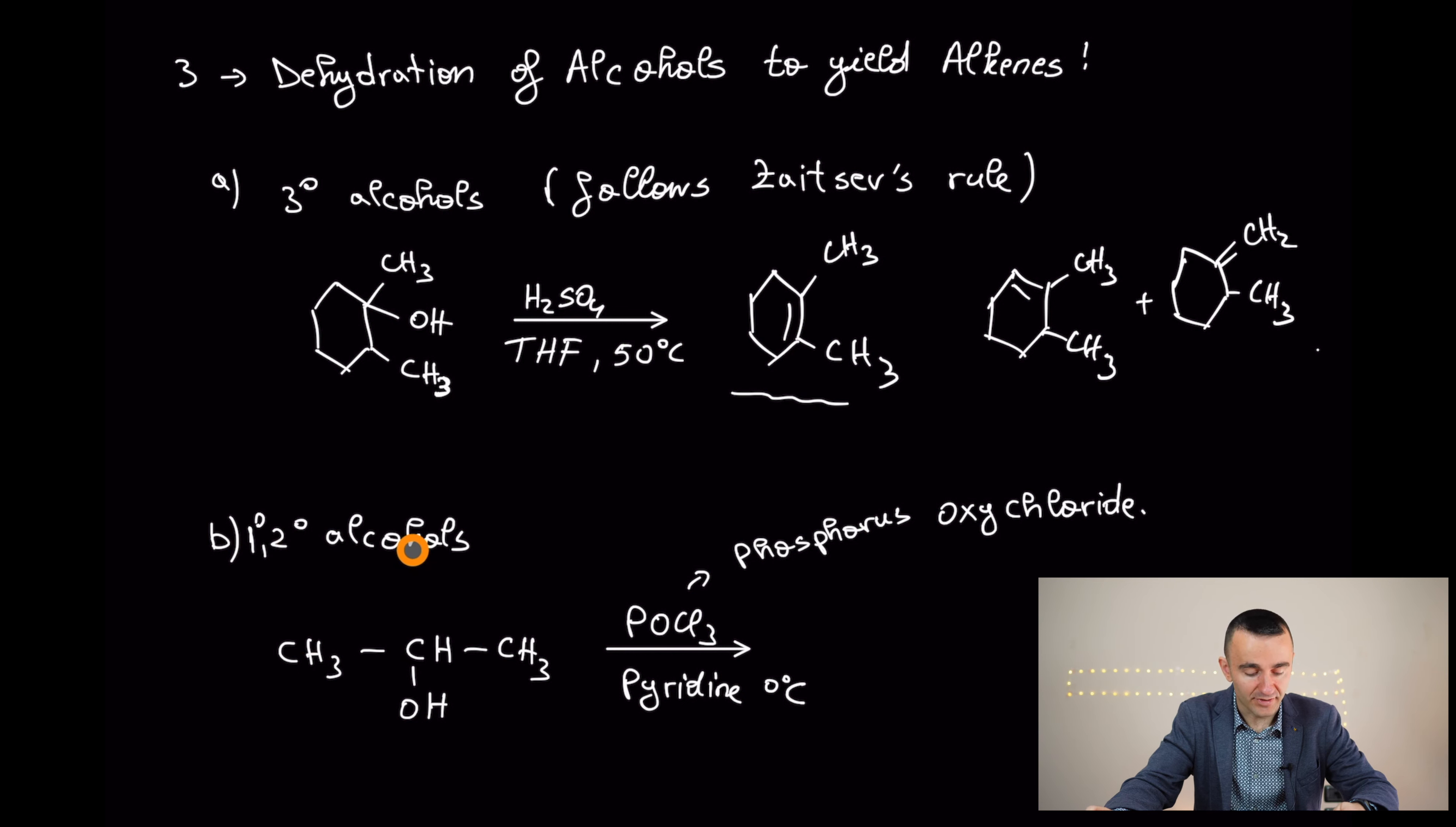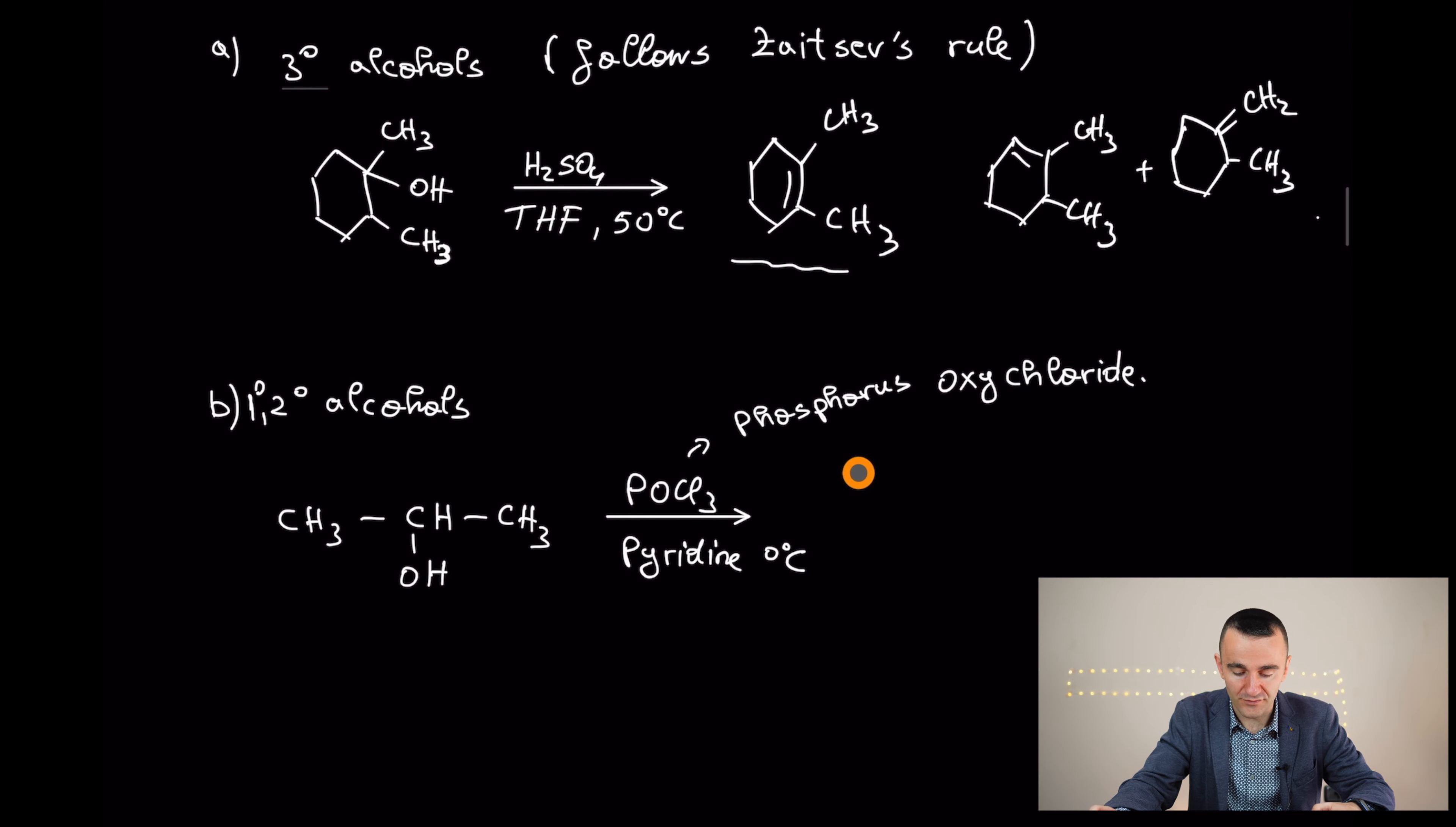In case of primary and secondary alcohols, you can perform this experiment under harsh conditions, like very concentrated sulfuric acid, but some compounds are sensitive and you cannot apply that powerful acid to convert it. So another solution is using phosphorus oxychloride in pyridine solution. In this case, this goes like an E2 mechanism and you are going to yield again alkene. Right? Keep in mind this compound.